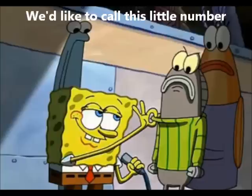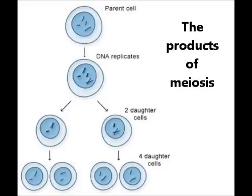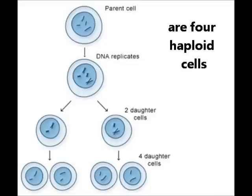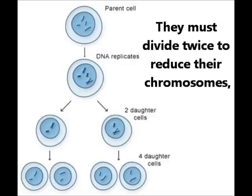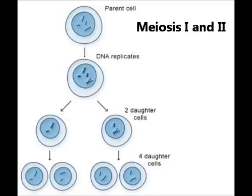We'd like to call this little number part two: meiosis. The products of meiosis are four haploid cells. They must divide twice to reduce their chromosomes. And so we have meiosis one and two.